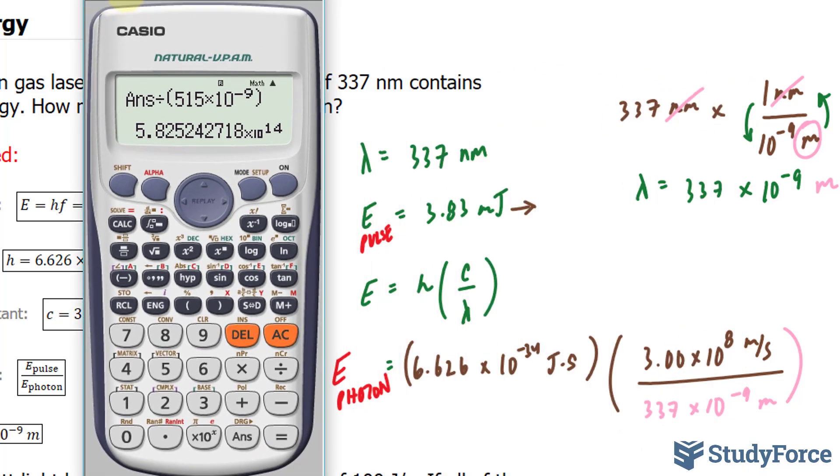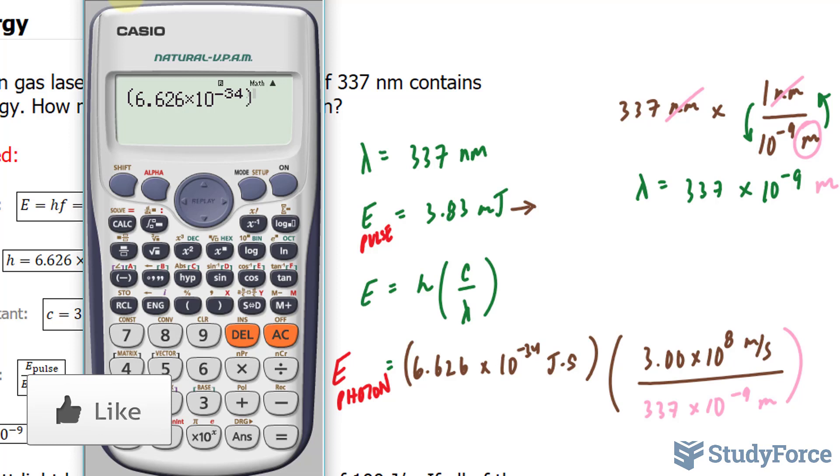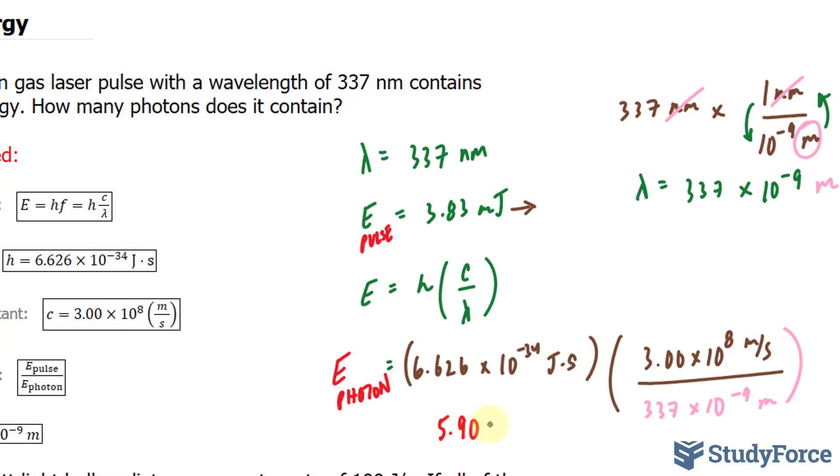Starting with 6.626 times 10 to the power of negative 34. And this is being multiplied to 3.00 times 10 to the power of 8 divided by 337 times 10 to the power of negative 9. We end up with 5.89 and we want this to 3 significant figures, 5.90 times 10 to the power of negative 19. And let's see what the units are. This unit will cancel out with this unit. The seconds will cancel out with the seconds. So this is in joules.